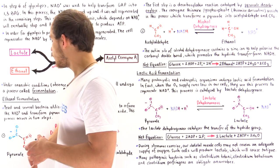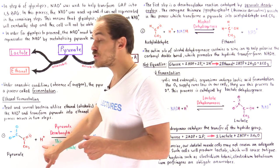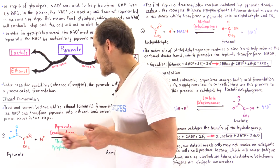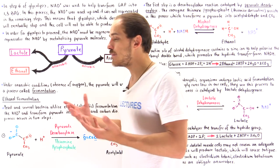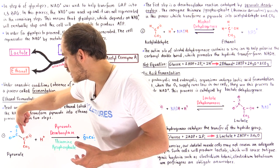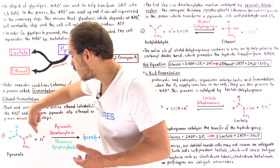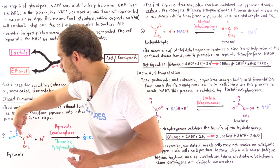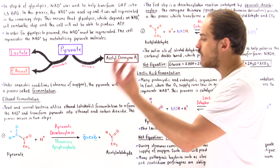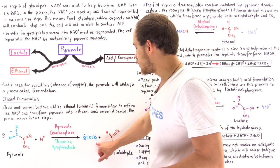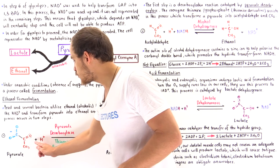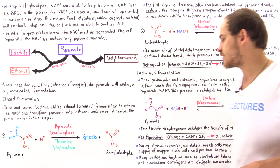We begin with the pyruvate molecule. In the presence of an H+ ion and the coenzyme thiamine pyrophosphate — a derivative of thiamine, which is vitamin B1 — a bond is broken. The H+ creates a new bond, while the carbon dioxide molecule is released into the environment in gas form. The remaining structure becomes acetaldehyde.